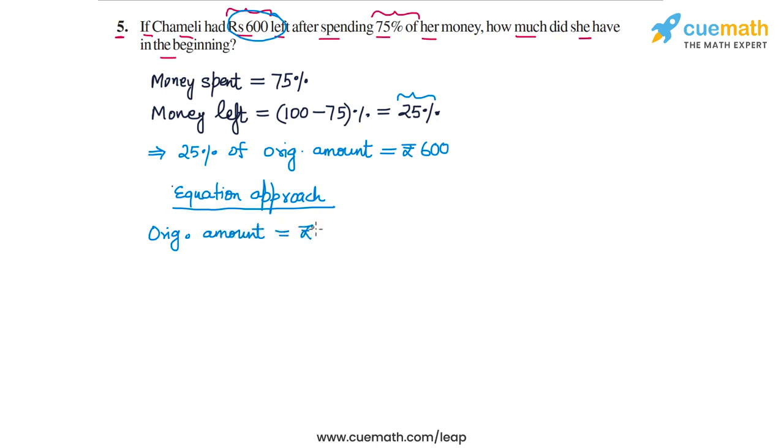Now 25% of Rs. X is Rs. 600. So 25% of Rs. X is equal to Rs. 600, which means that we can now write an equation in X.